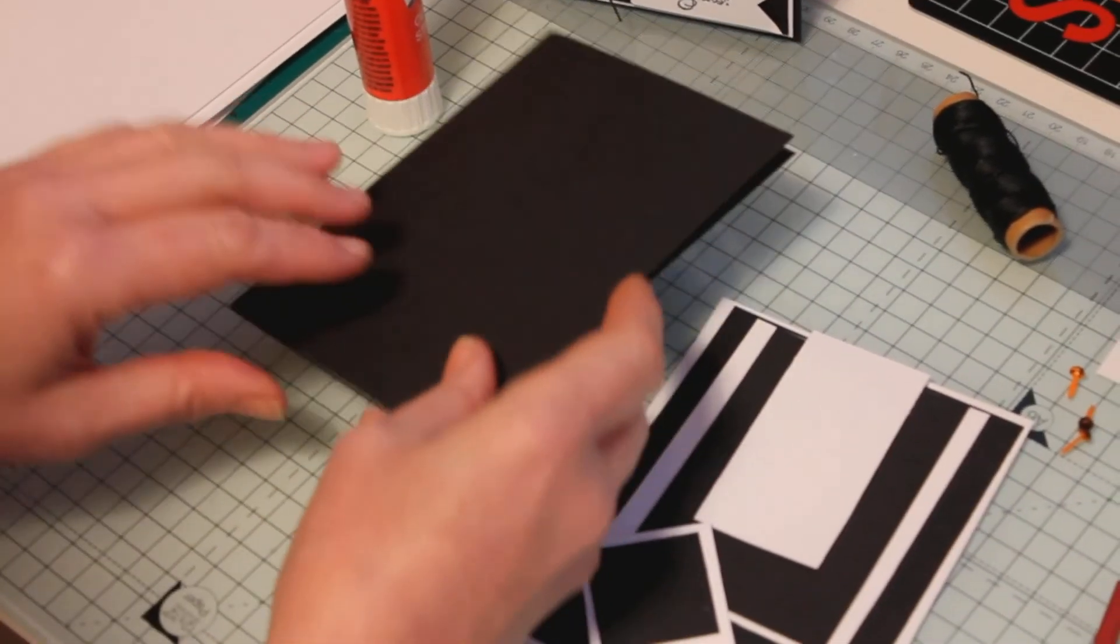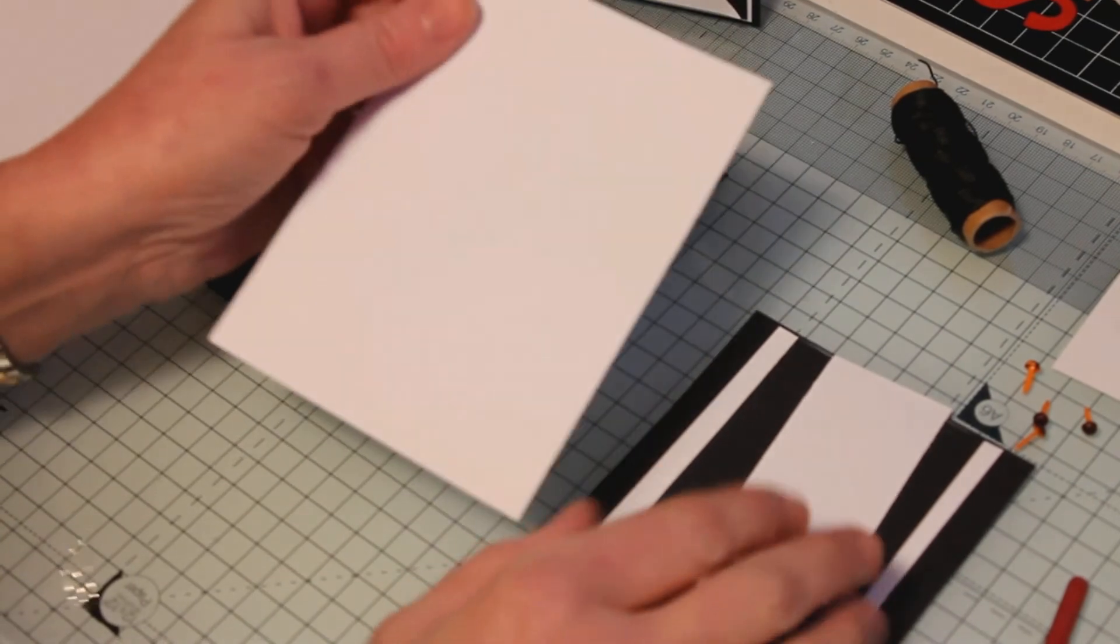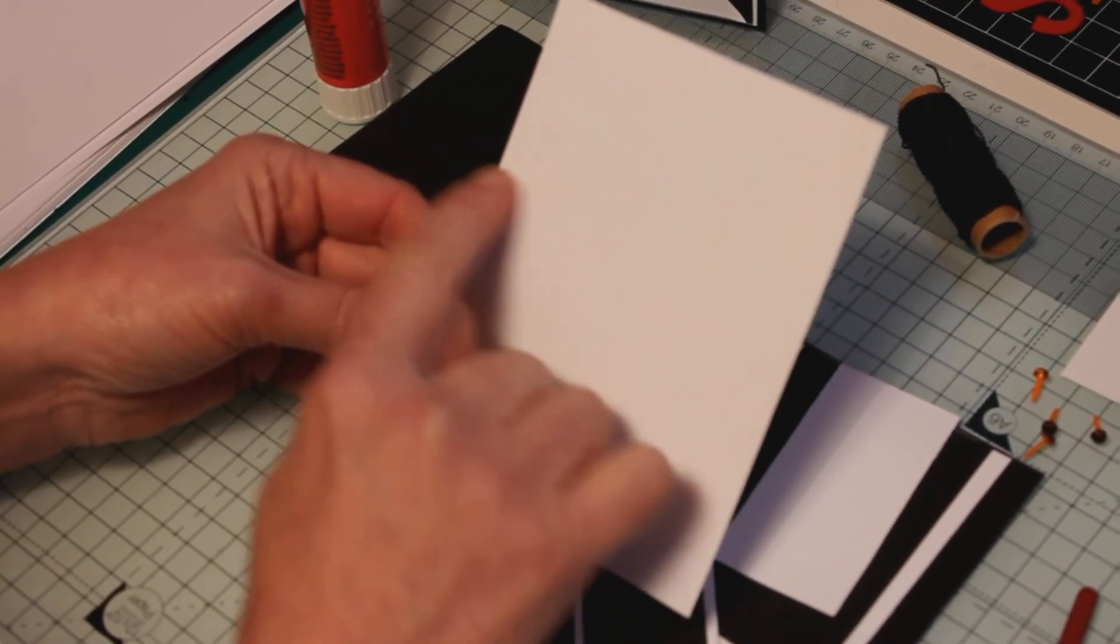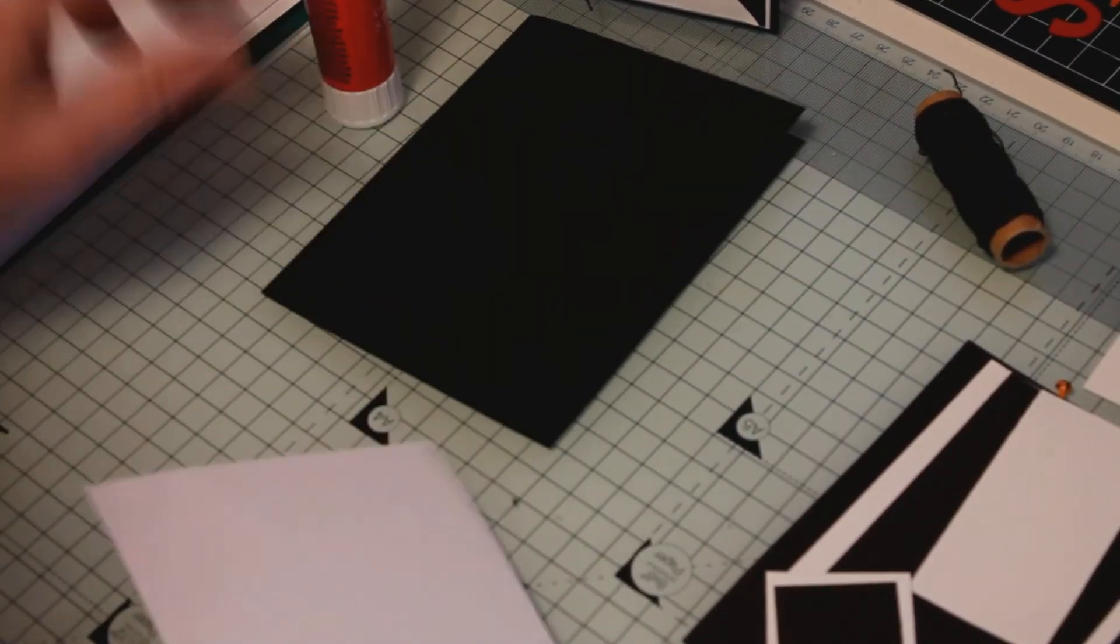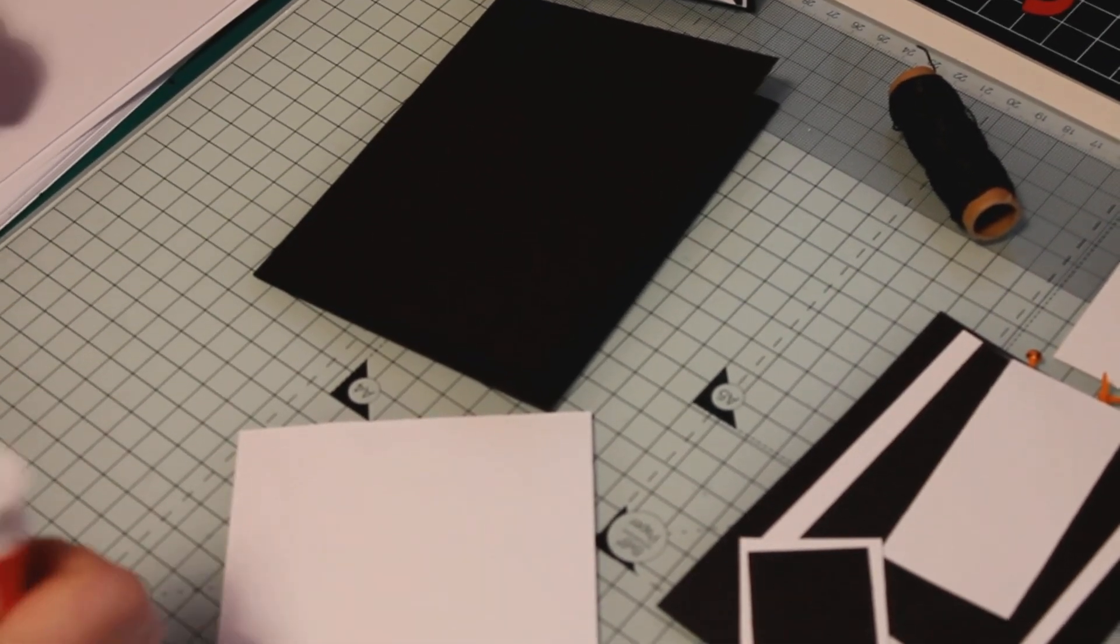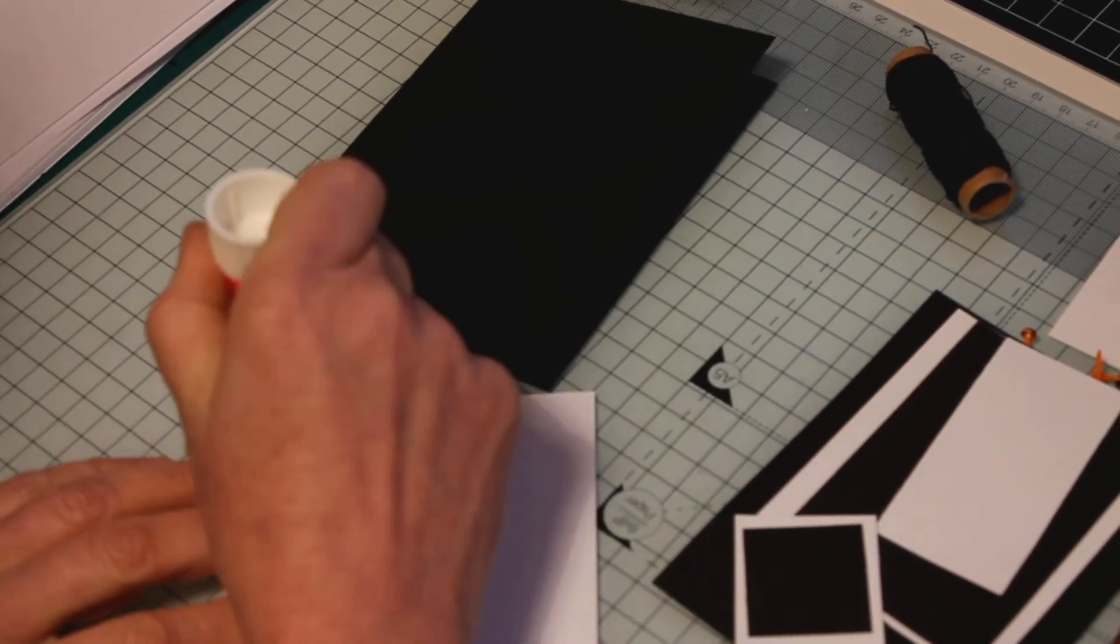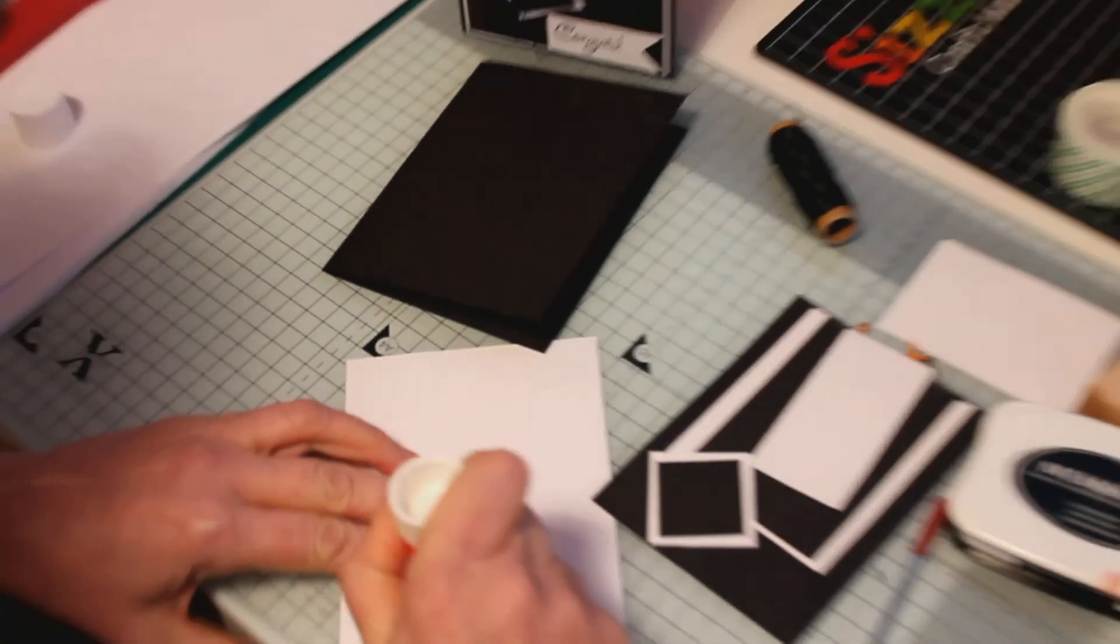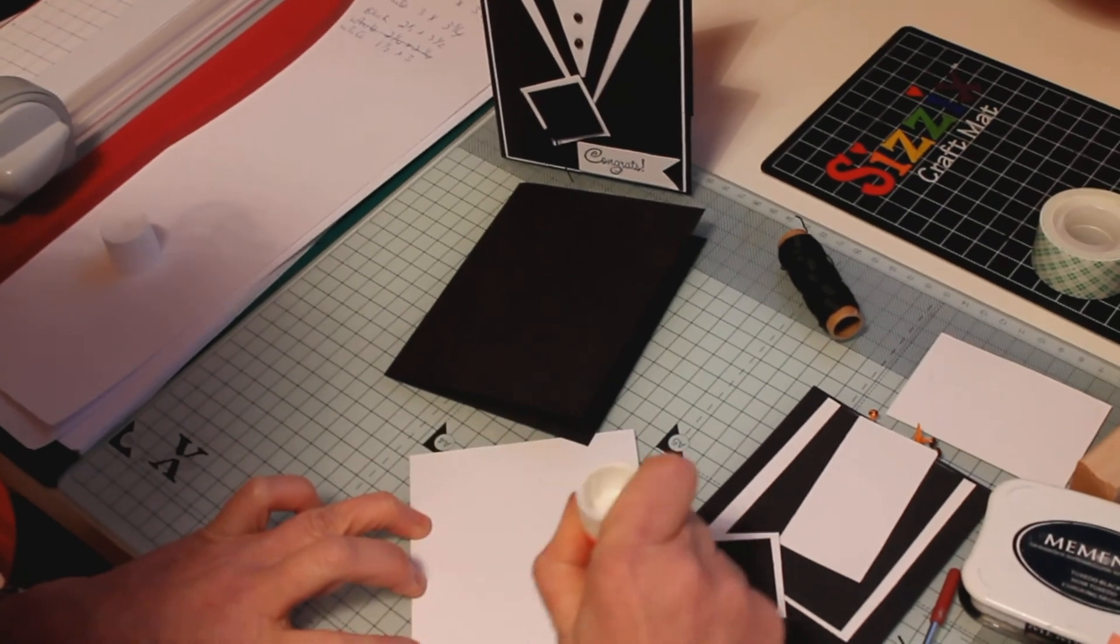Then the second layer is the white layer and this white layer I've cut at five and a quarter by four inches. So we'll go ahead and we'll mat this layer onto the card blank. Make sure you get to the edge of your card with the adhesive so it sticks properly.